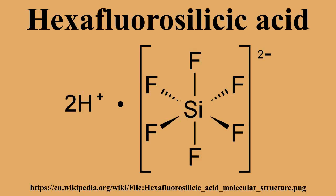Hexafluorosilicic acid is commonly used for water fluoridation in several countries including the United States, the United Kingdom, and the Republic of Ireland. In the U.S., about 40,000 tons of fluorosilicic acid is recovered from phosphoric acid plants and then used primarily in water fluoridation, sometimes after being processed into sodium silicofluoride. In this application, the hexafluorosilicic acid converts to the fluoride ion, which is the active agent for the protection of teeth.